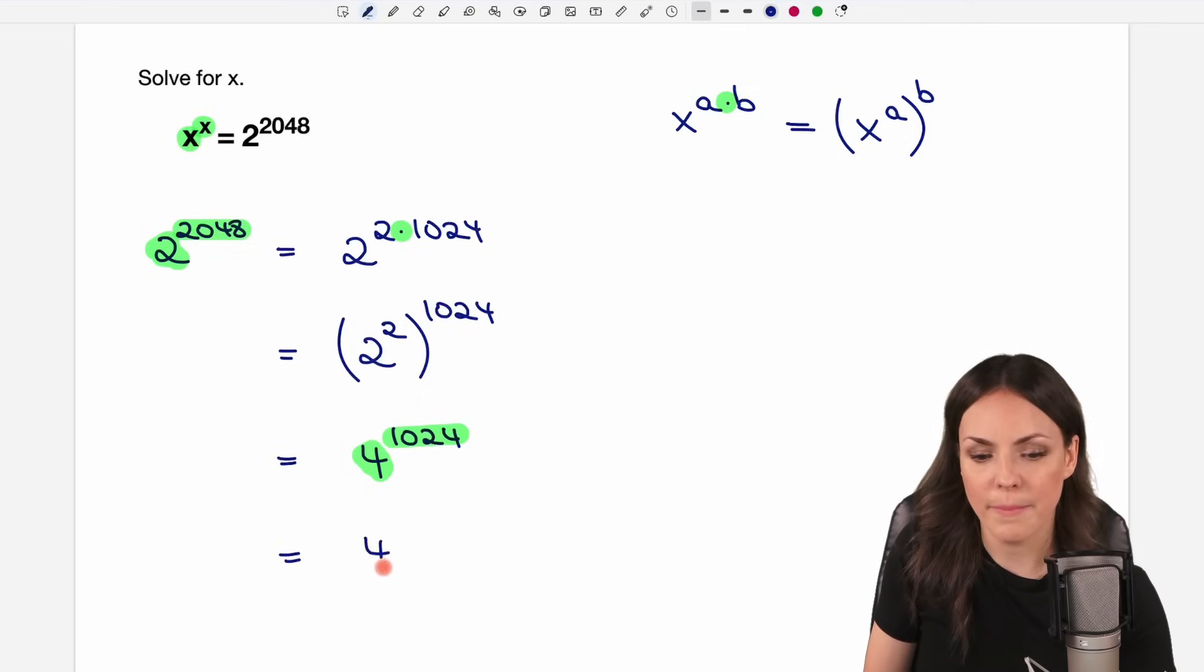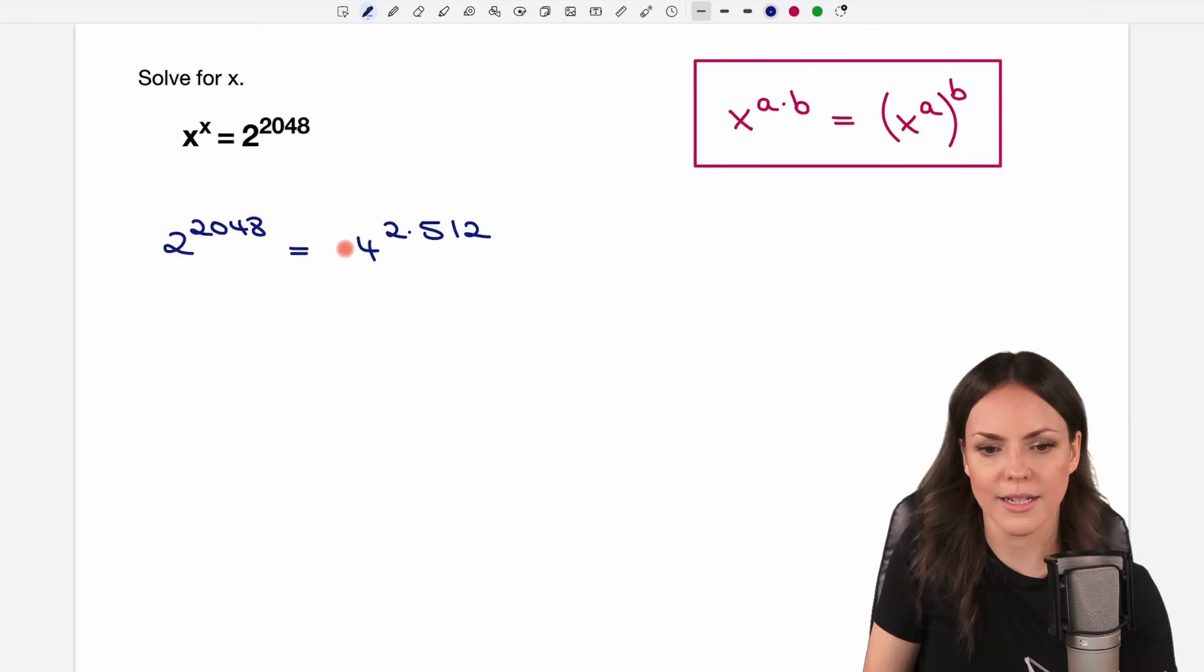We keep the base as it is and write the exponent as a product. This number is again an even number, so we can write it as 2 times 512 this time. I wrote this down on the next page again.